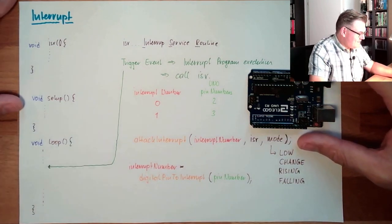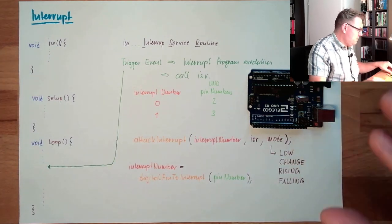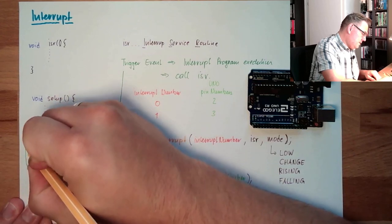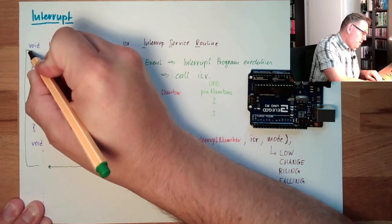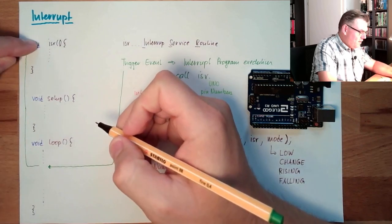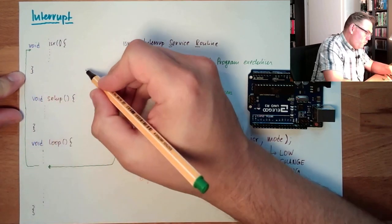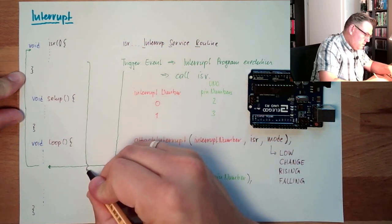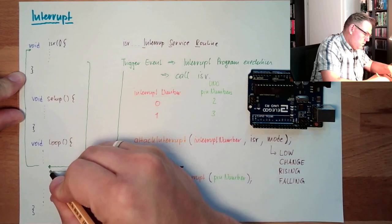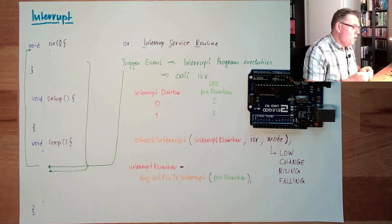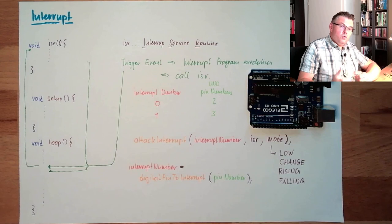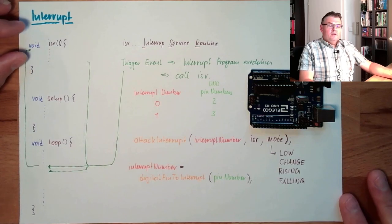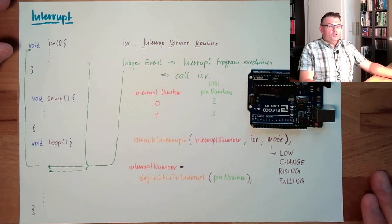So these are interrupts. The interrupt will be executed right after the trigger event. If the interrupt service routine is finished, we will return to the next command, and the normal program execution will be done.